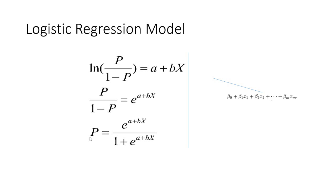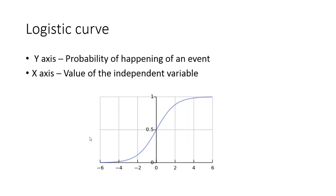Using this last equation, we can also plot what we call the logistic curve. This is how the logistic curve looks like. On the y-axis, you have the probability of happening of an event — probability always lies between 0 and 1, so the y-axis has an upper limit of 1 and a lower limit of 0. On the x-axis, you have the value of the independent variable, which has no restriction and can range from minus infinity to plus infinity.